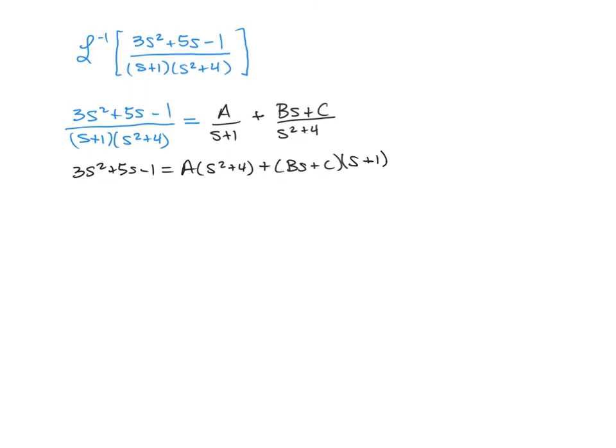And now we're going to have to multiply all of this out and sadly match coefficients. So that's going to be 3s squared plus 5s minus 1 equals As squared plus 4A plus Bs squared plus Bs plus Cs plus C.